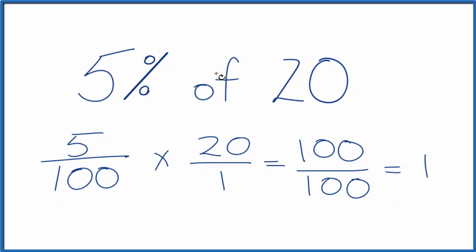So 5% of 20, that is equal to 1. This is Dr. B, finding 5% of 20. The answer is 1. Thanks for watching.